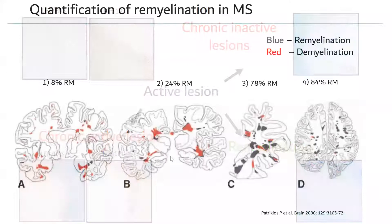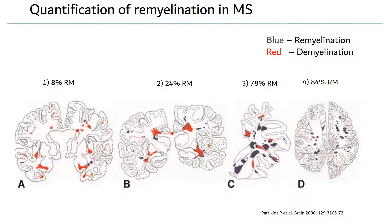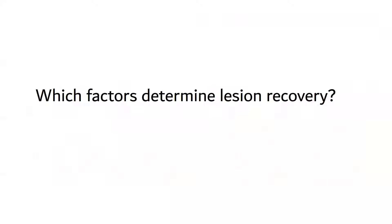When looking at autopsy cases of MS — work by Hans Lassmann — one striking aspect is the heterogeneity in the repair response. Some patients have 84% of lesions appearing as shadow plaques, i.e., remyelinated, at autopsy, while at the other end of the spectrum only 8% of plaques are remyelinated. Therefore, a key question is to understand the factors that determine lesion recovery.